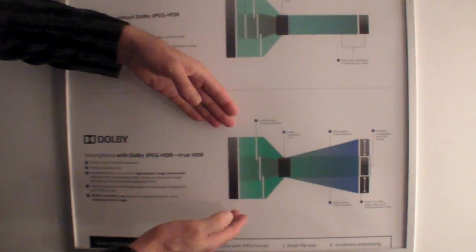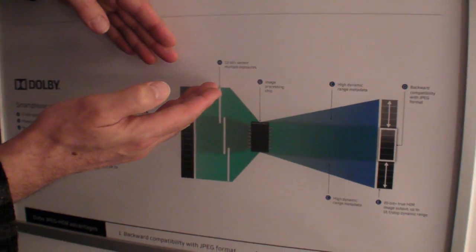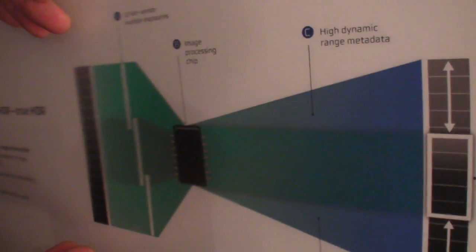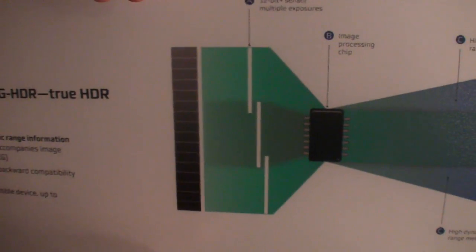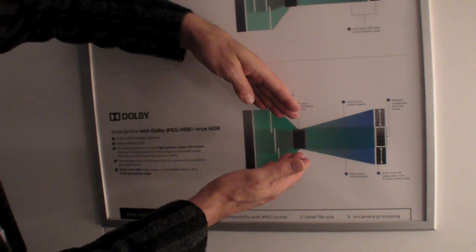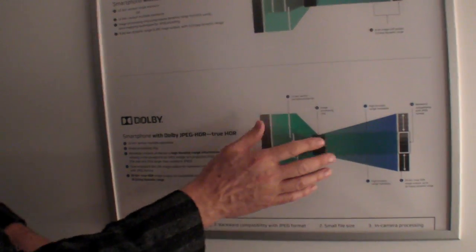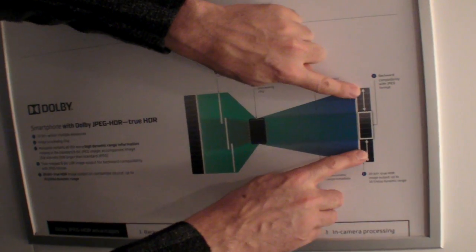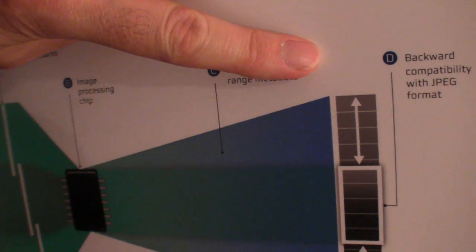The first step is that when the picture is taken, because of exposure bracketing, I was able to capture the full 20 bits or so of the original dynamic range of the scene. I then compressed the dynamic range for backwards compatibility purposes, but also preserved in the header of the file the metadata that will allow me to later reconstruct the full dynamic range.